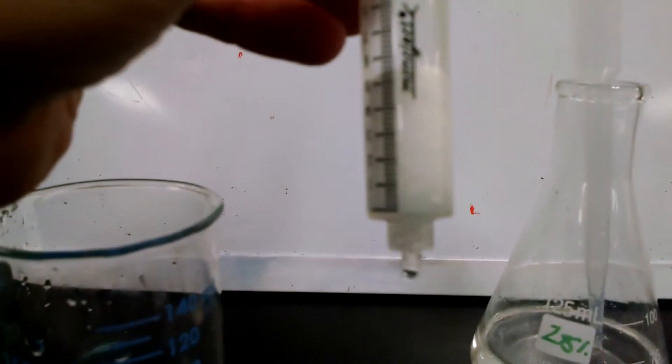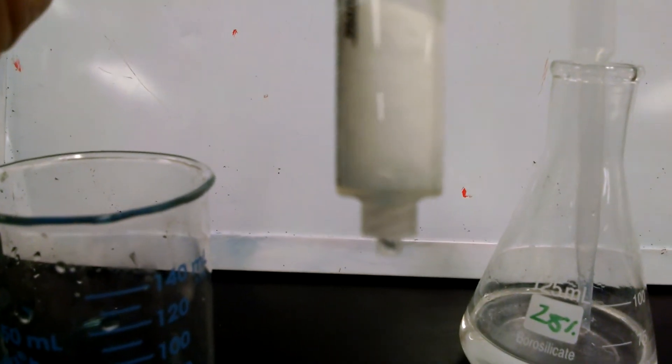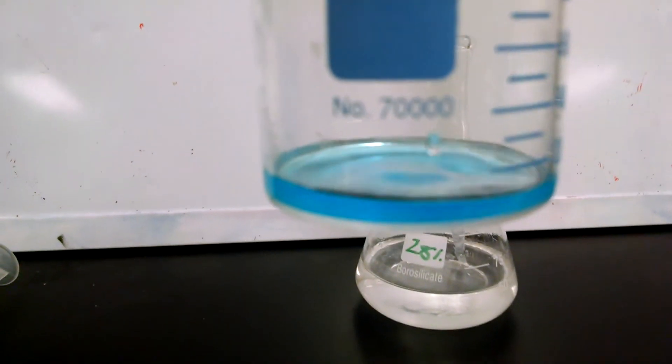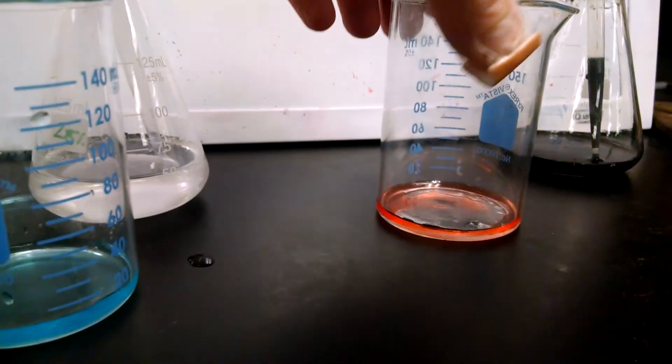We see the final result. Our column now is clear, meaning that both the red and the blue has been taken off. And let's see what we've got. I've got a beaker of blue and I have a beaker of red.